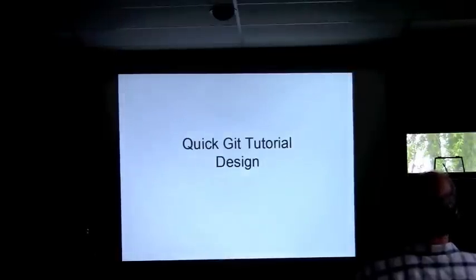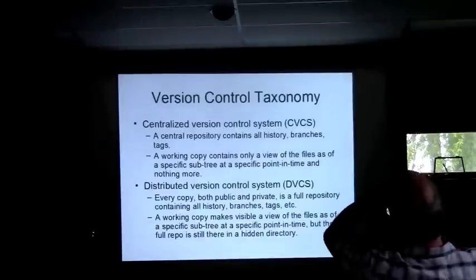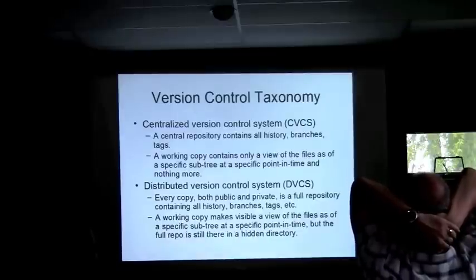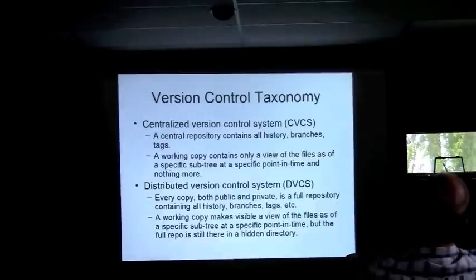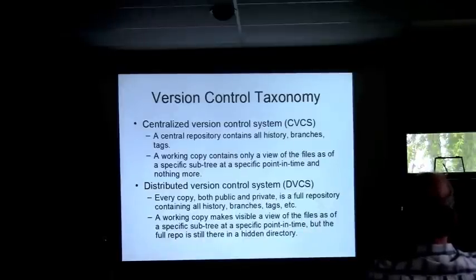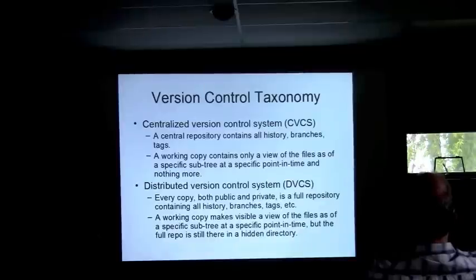Here's a high-level view of Git design: version control taxonomy. There are two kinds of version control systems — centralized ones and distributed ones. Someone joked 'Git ones and the stupid ones,' but that's somebody else's taxonomy, not mine. Subversion, of course, is an example of a centralized system.